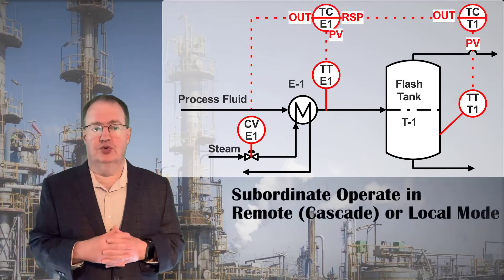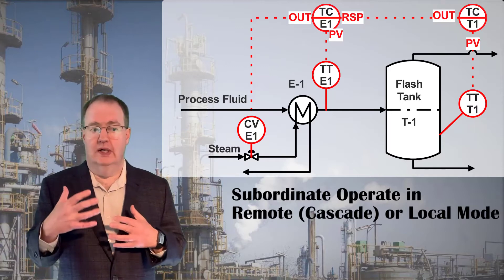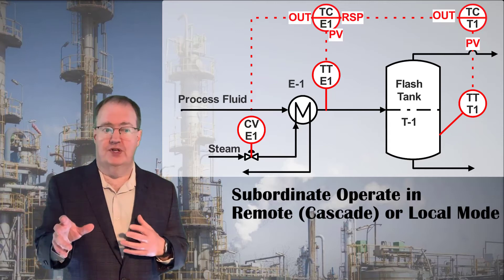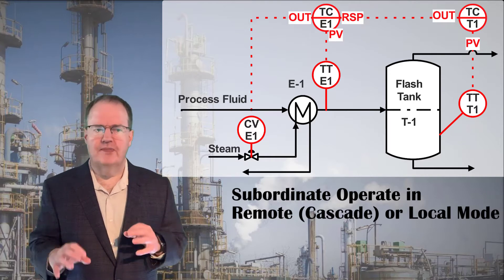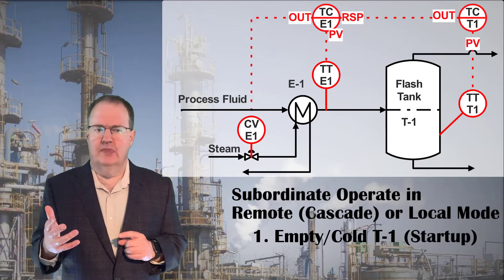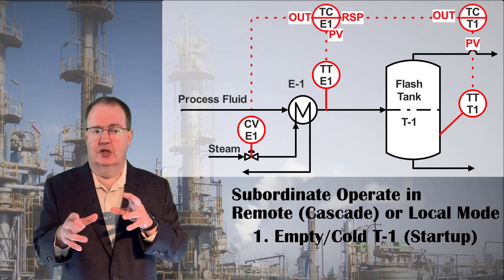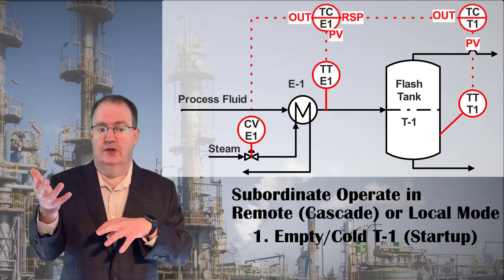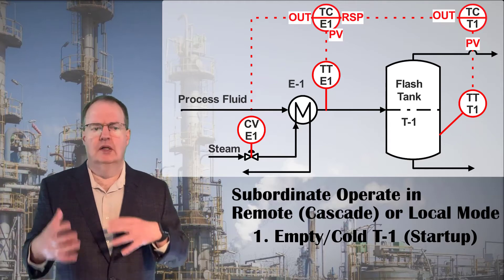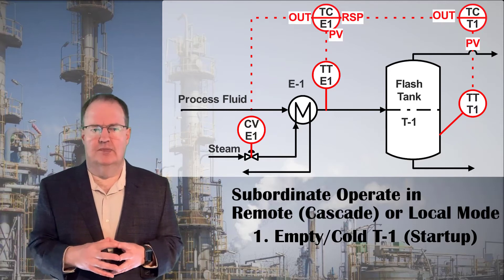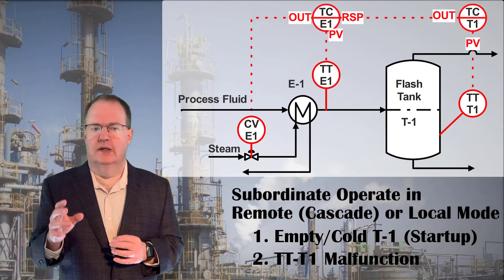The subordinate controller can be operated in cascade or remote set point mode as drawn, or it can be switched to local mode where it ignores the supervisory controller. Why would we allow this? When TT T1 is starting up and empty, it would be better to run in local mode — just controlling the exit temperature of the heat exchanger and ignoring the TT T1 temperature until TT T1 fills and heats up — because otherwise the supervisory controller might call for too much heat early on, overheating the fluid or causing an overshoot in the temperature. Local control would also allow temporary operation if TT T1 malfunctioned.